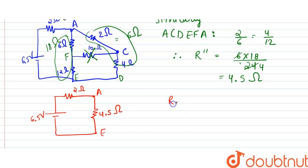So since they are in series, the R equivalent would be equal to 2 plus 4.5. That is 6.5 ohms. The voltage is 6.5 volt. So obviously, according to Ohm's law, the current would be equal to V by R. So that is equal to 6.5 by 6.5. So that is 1 ampere.